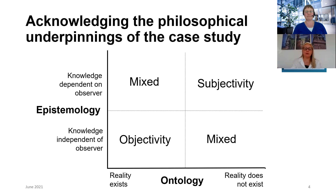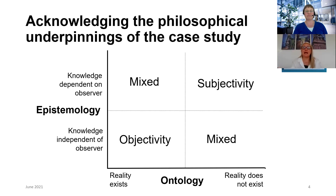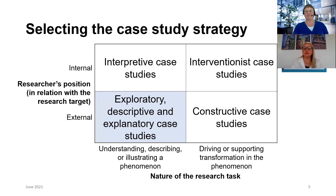Depending on the stance you take, there is more objectivity or more subjectivity. A very objective position would be a positivist position, where the researcher assumes that reality exists and knowledge can be created independently as an observer. The other extreme is subjectivity, comprising stances like pragmatism or radical constructivism, where the notion is that social reality does not exist as such but is always created in a co-creation process between the researcher and the actors in the study, and that has implications for your case study strategy.